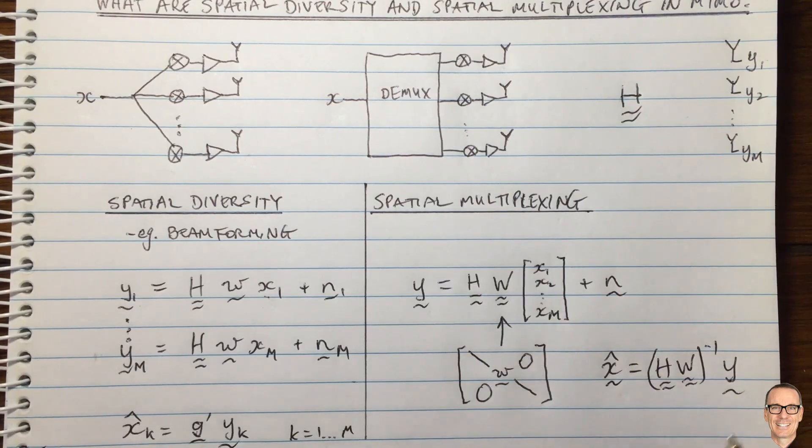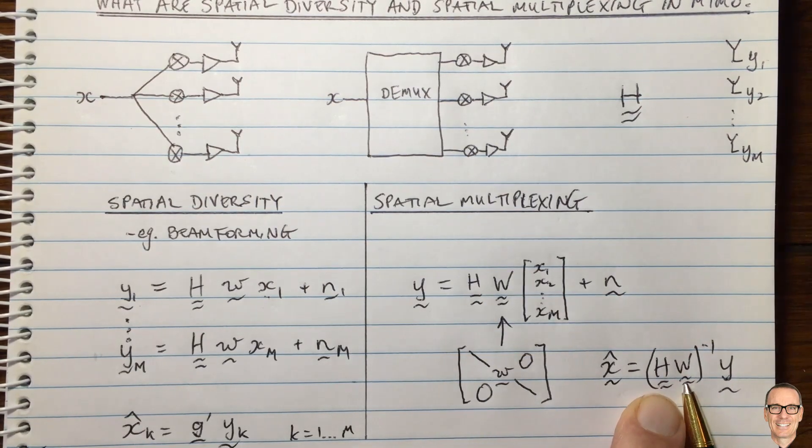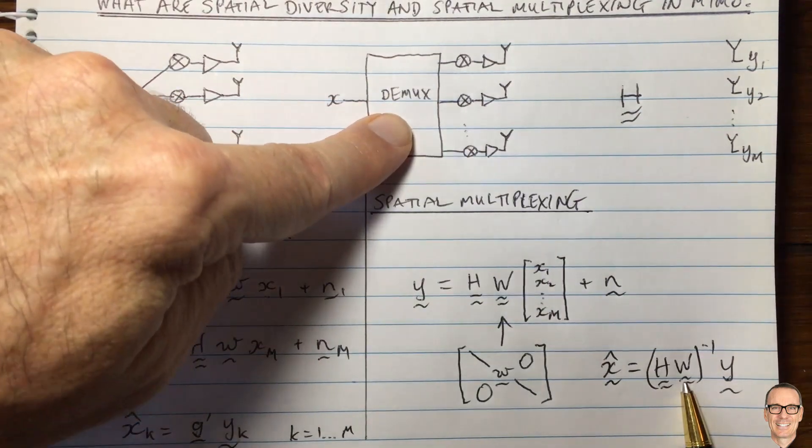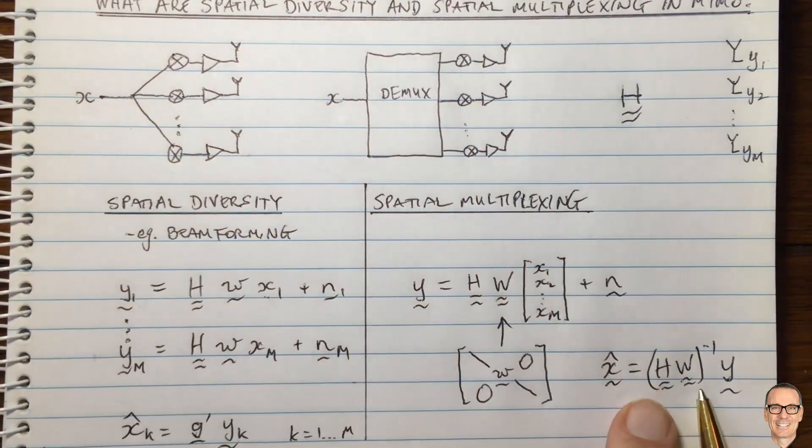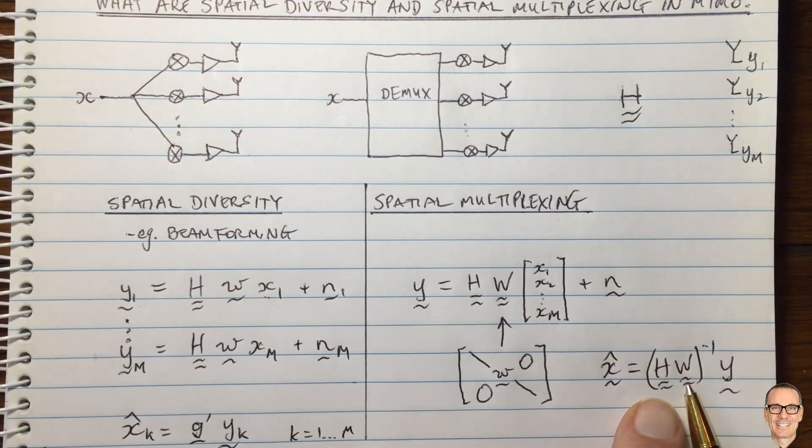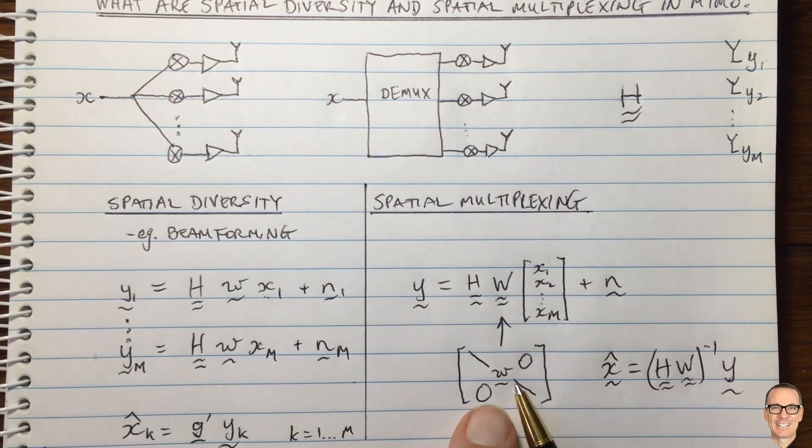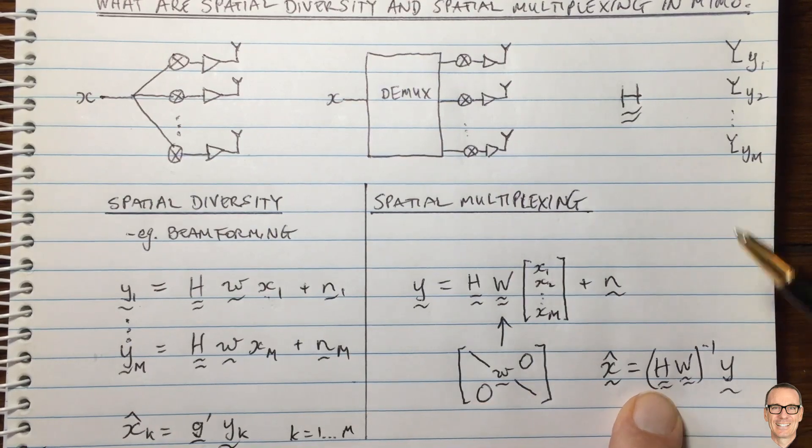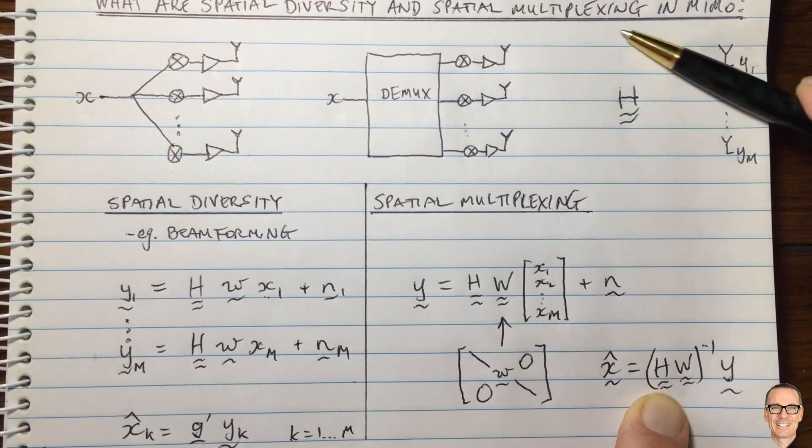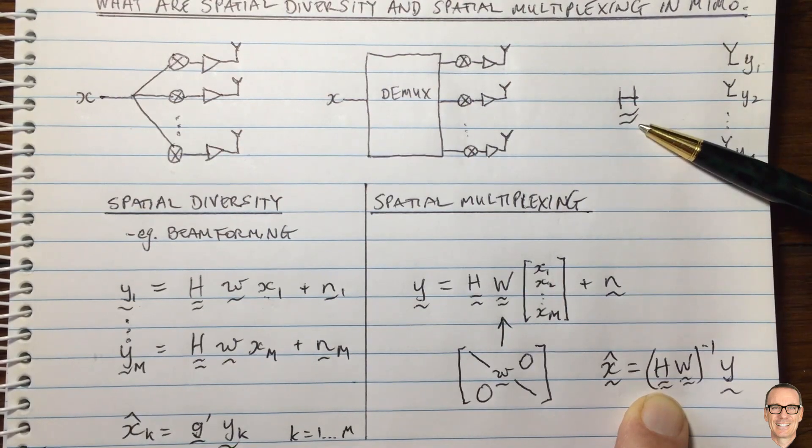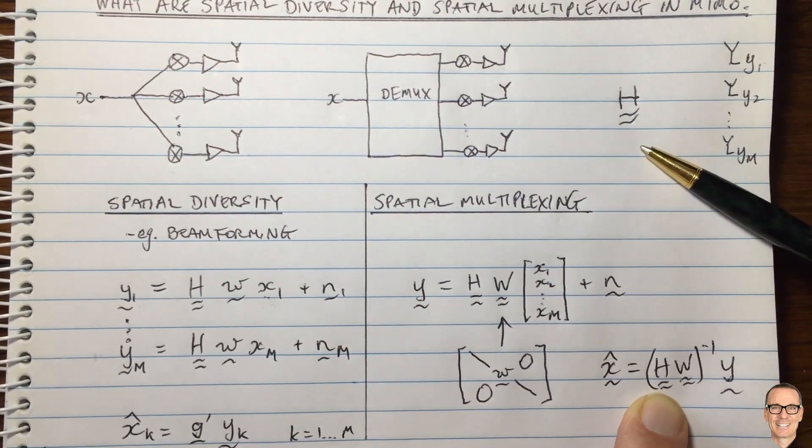And of course, here you can see why we need a diversity of paths if we want to use the spatial multiplexing technique, because we need to be able to invert this matrix here. Now the W component can always be inverted, but the H matrix, which is the channel, whether it can be inverted or not depends on how much scattering there is in the channel.